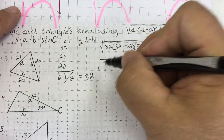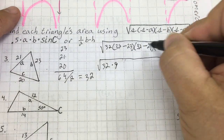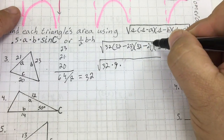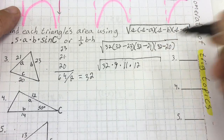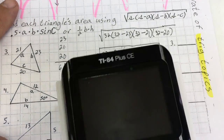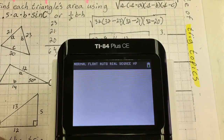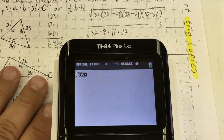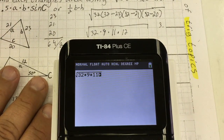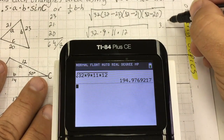I like to simplify it a little bit first. 32 times — well, 32 minus 23 is 9, and 32 minus 21 is 11, and 32 minus 20 is 12. Now I'm going to enter that into the calculator: square root of 32 times 9 times 11 times 12. That gives me 194.97 — I'll just say 195.